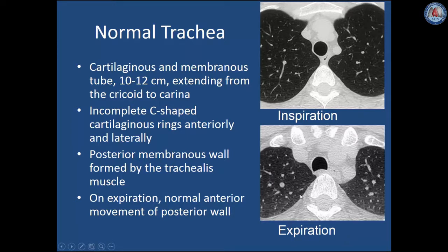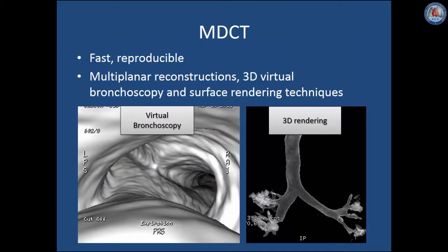Note that lung attenuation is higher than on inspiration due to the lower lung volumes — these are ways to identify an expiratory image. Multi-detector CT is a fast and reproducible method of imaging the trachea, which can be imaged in seconds. That data set can be reconstructed into multiplanar reconstructions, and 3D virtual bronchoscopic images and surface rendering techniques can be generated.